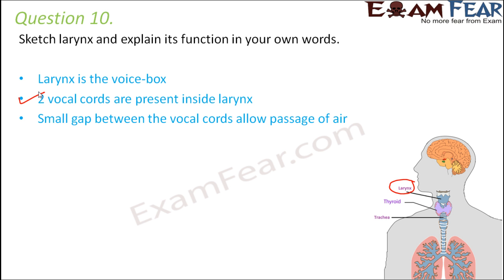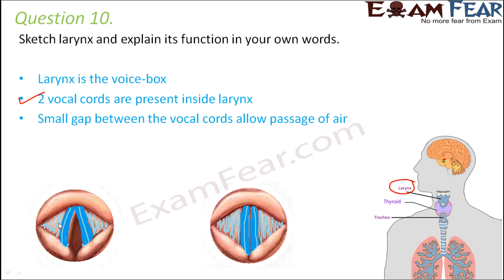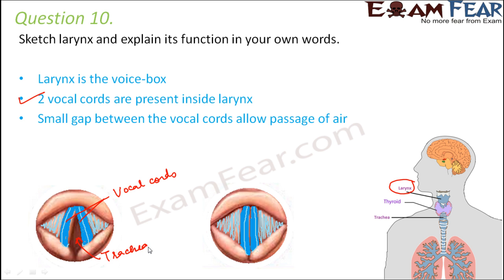There are two true vocal cords present inside the larynx, and a gap created between the two vocal cords allows passage of air. The two vocal cords are the blue-colored structures visible in the diagram. When they open, they allow air to pass through into the trachea — this is how the scenario looks when we breathe.